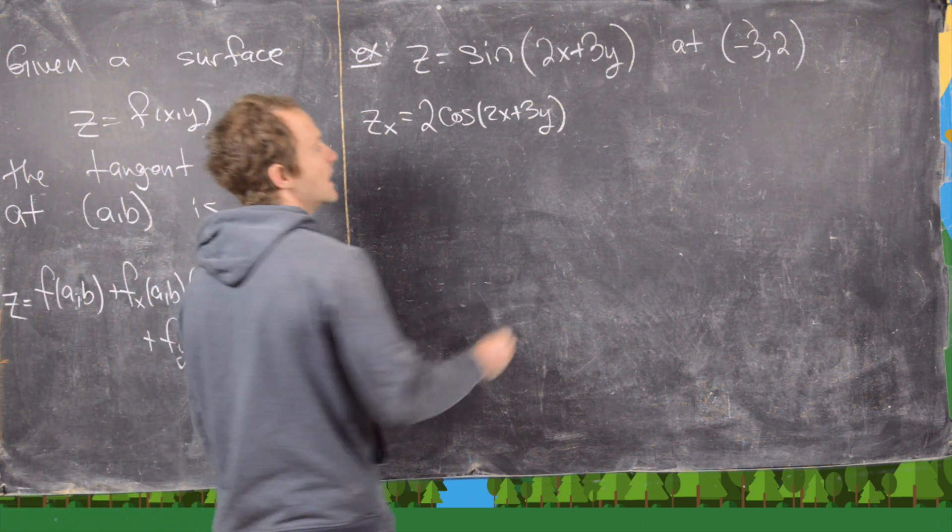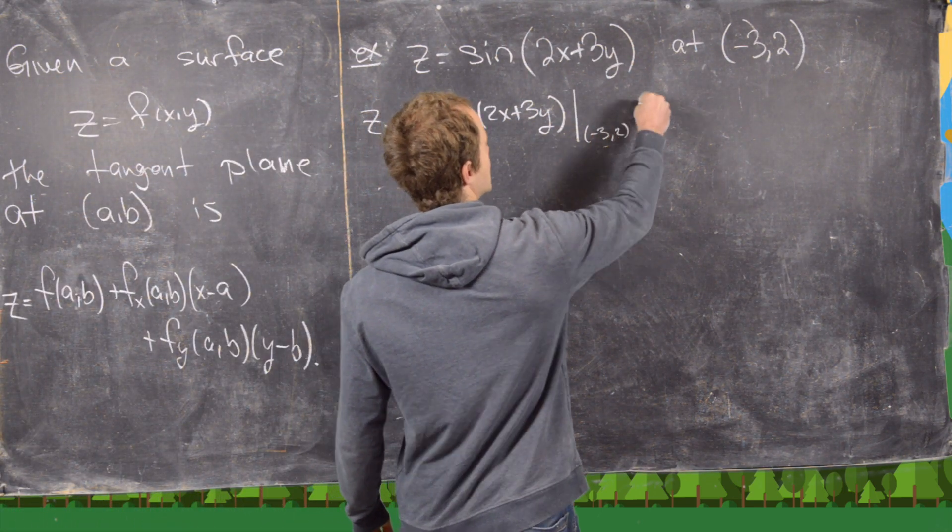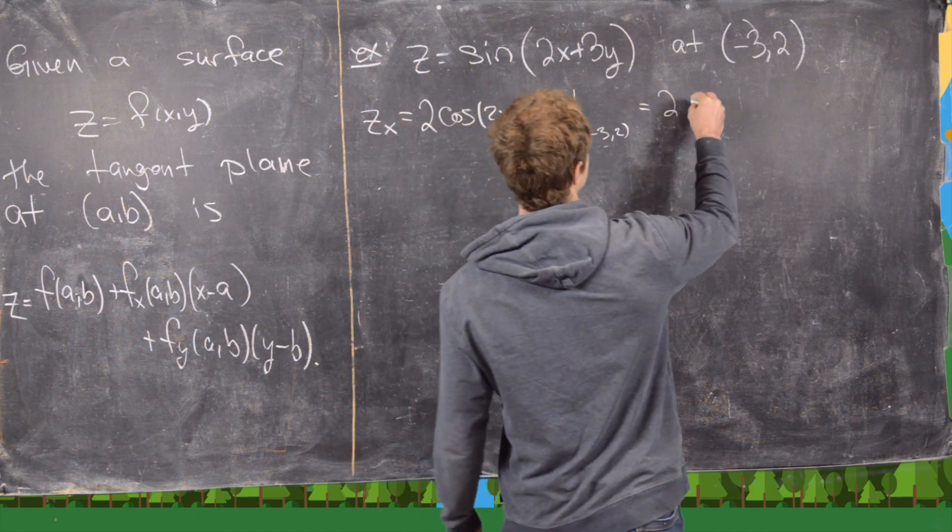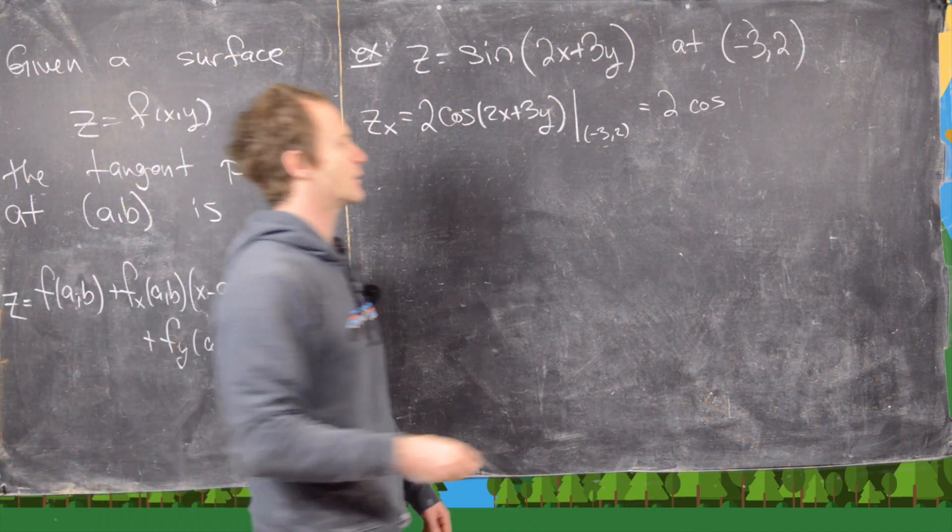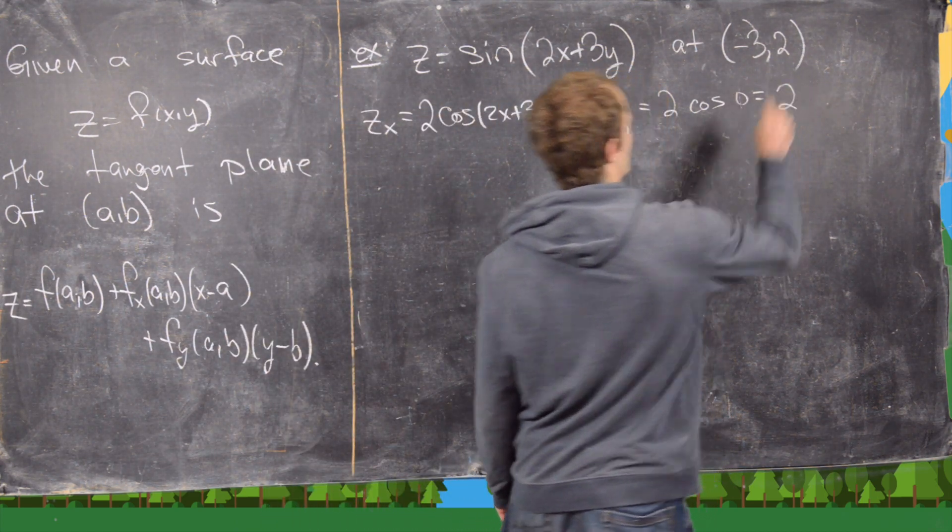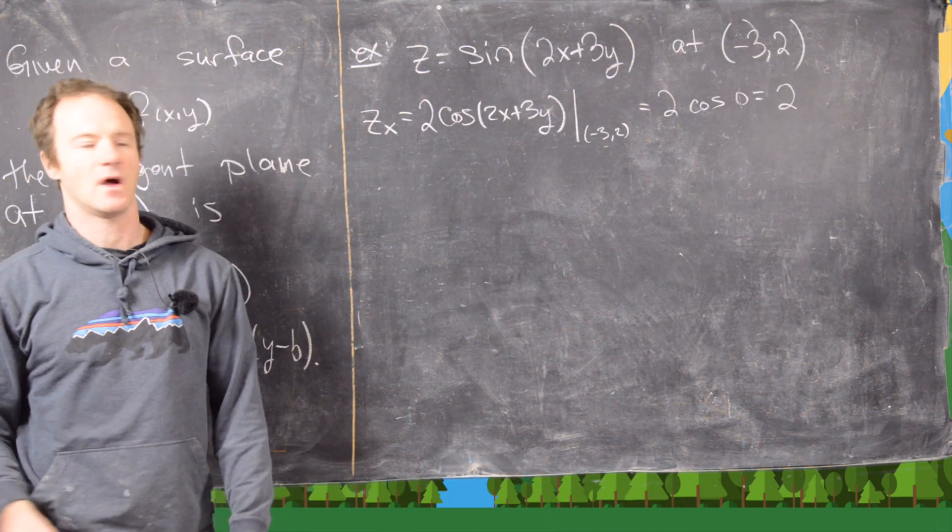Now let's evaluate this at (-3, 2). That's going to give us 2 times cosine of 0. That's what we get when we plug that in there. But cosine of 0 is 1, so we just get 2.